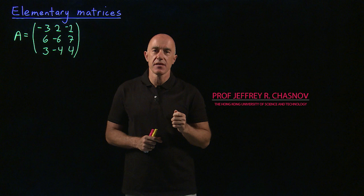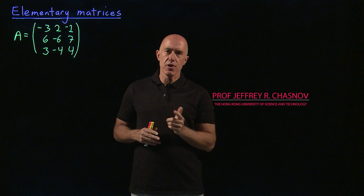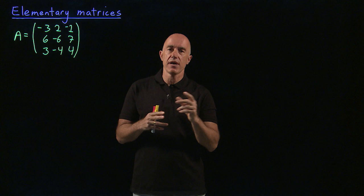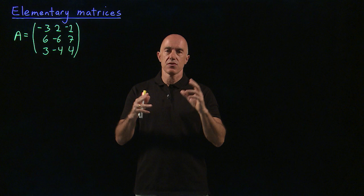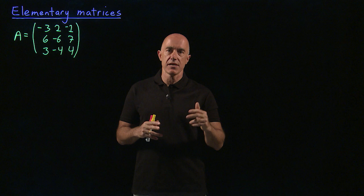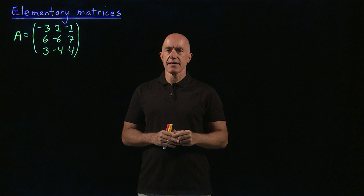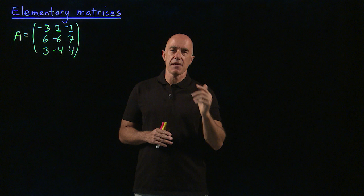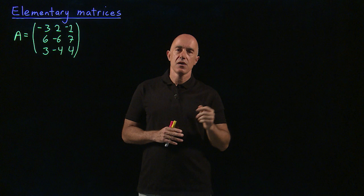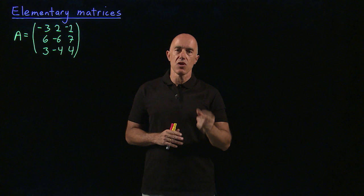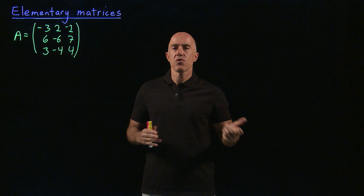Previously we used Gaussian elimination to solve a system of linear equations. The main point was we converted the matrix A in the equation AX equals B to an upper triangular matrix. It turns out that the Gaussian elimination procedure actually gives us a matrix decomposition. Not only do we convert A to U, we can also write A as L times U, where L is a lower triangular matrix and U is an upper triangular matrix. That's called the LU decomposition of A.